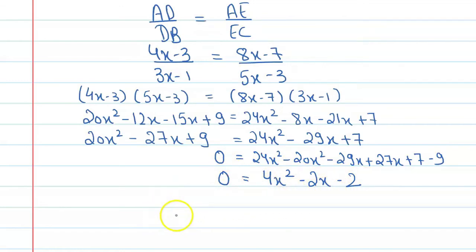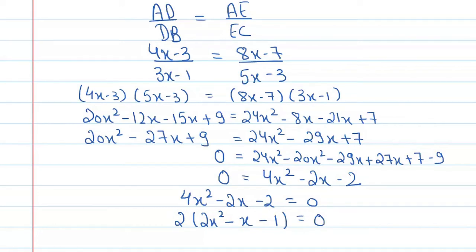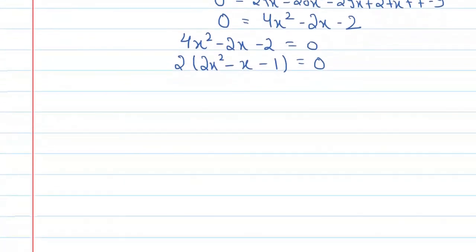So here you can see you have got a quadratic equation. If you want to simplify and write it, you can write it as 4x square minus 2x minus 2 equals 0. But if you take 2 common, it's 2x square minus x minus 1 equals 0. Alright, let's solve this. So this 2 will go to the denominator, 0 by 2 is 0, so we will get 2x square minus x minus 1 equals 0.